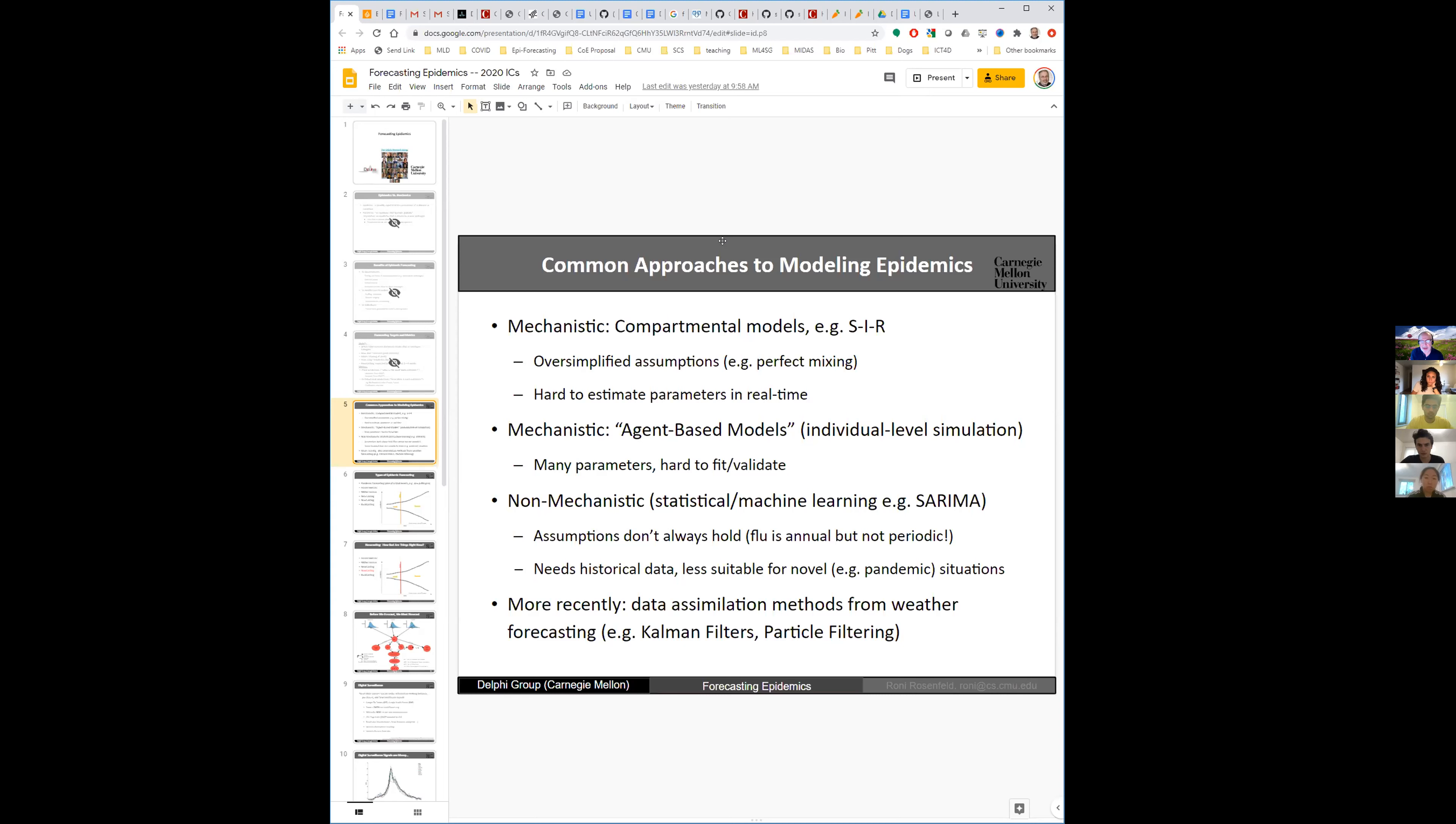And certainly for forecasting repeating epidemics, it really hasn't done very well. The main reason it didn't do very well is because the reality is much more complicated than the story. There are lots of important things that are not captured by the story. So if you go to the other extreme, mechanistic view is something that in the field is called agent-based models.